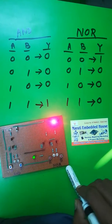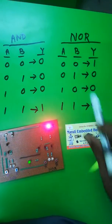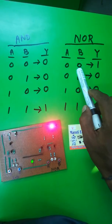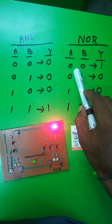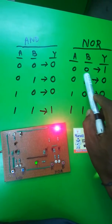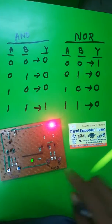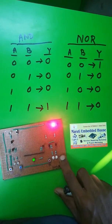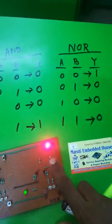First of all, NOR gate. When A and B both are 0, means input 0 and 0, the output is 1.